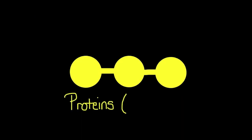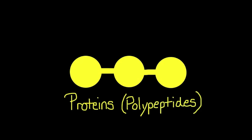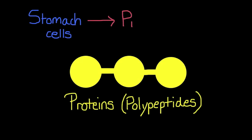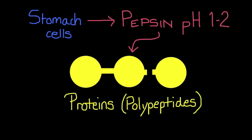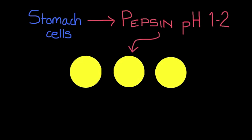In order to break down the substrate proteins, otherwise known as polypeptides, the stomach cells are the source of an enzyme known as pepsin. Pepsin works best at an optimum pH of 1 to 2 and will break down those proteins into the products amino acids.